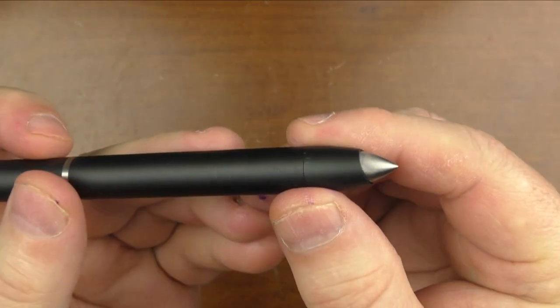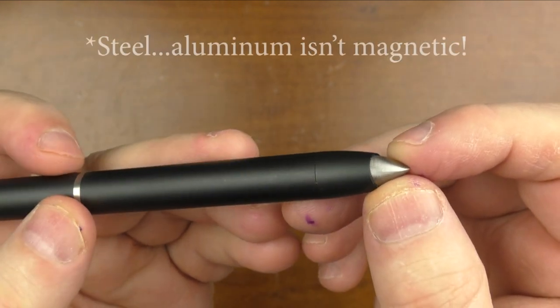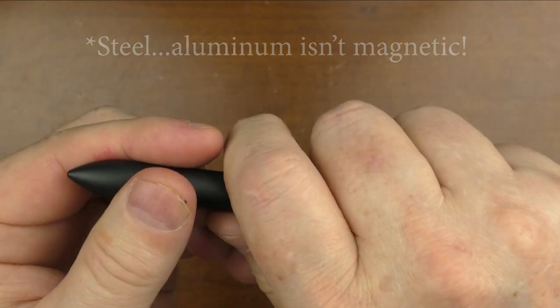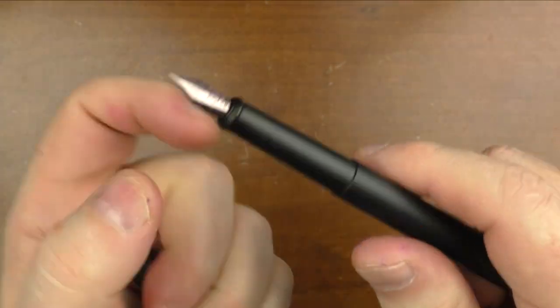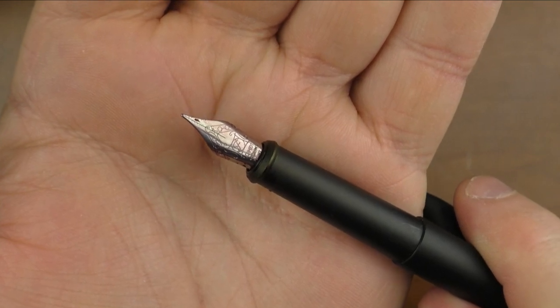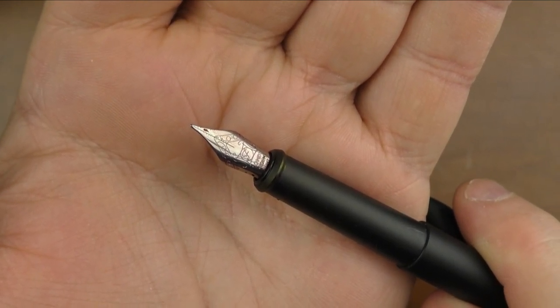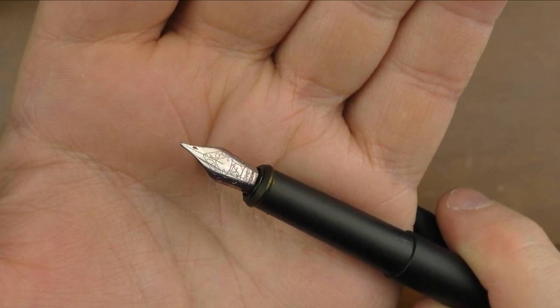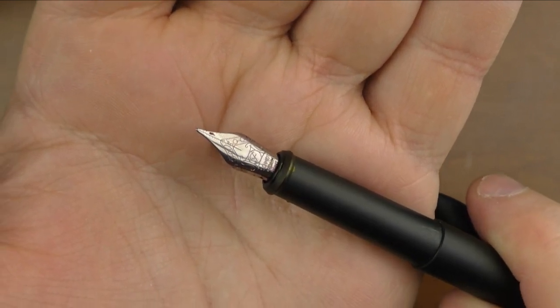The tip comes to a rounded point. The cap and barrel are straight. There is a silver colored band indicating the transition between the two. And then at the back of the barrel, it has this aluminum piece here, which is what affixes to the base. The cap snaps off, and underneath we have a Schmidt stainless steel nib.